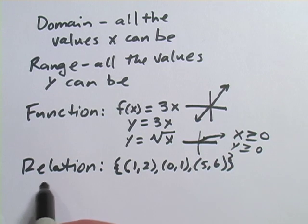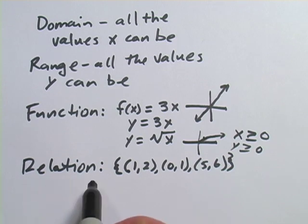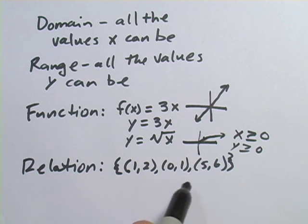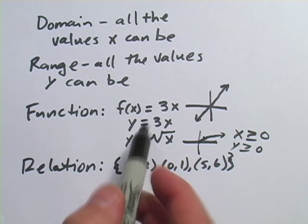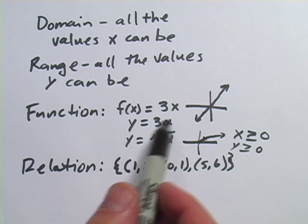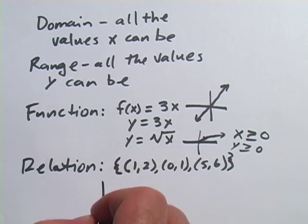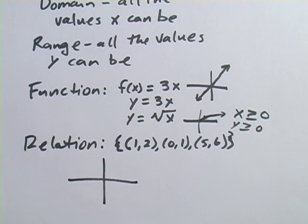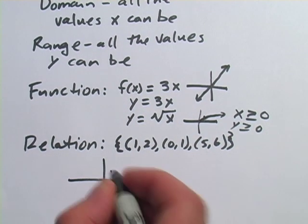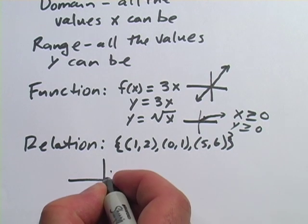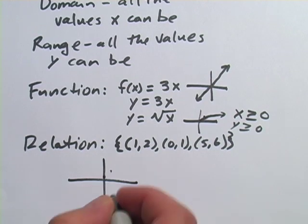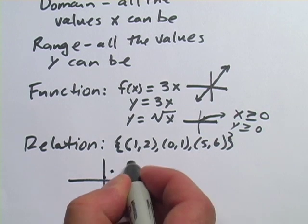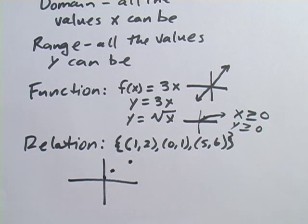One other thing that might pop up is something called a relation. A relation is sort of like a function, except it's defined by just a set of points. So instead of a formula that gives you lots of different points, a relation has a set group of points. If you were to graph this relation — it has the points (1,2), (0,1), and (5,6) — it would look like just that set of points, no line.